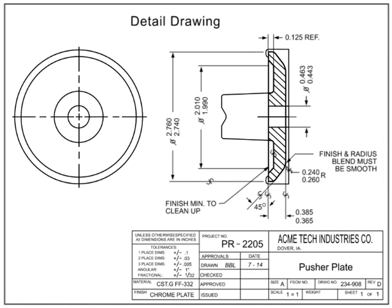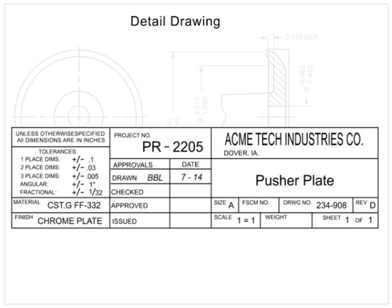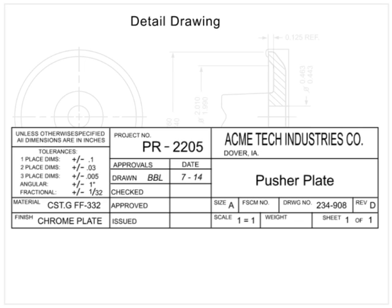Machine drawings are detail drawings that require machining to create the end product. They can be developed using a cast part as the original material. In this drawing, the casting from the last example was used as the starting material. This machining drawing will remove material from the original casting and add the finishes required to produce a final product with its own unique part number. Only the dimensions necessary to convert the original cast part into the new part are required; the casting dimensions are not shown.